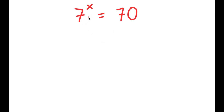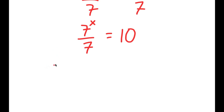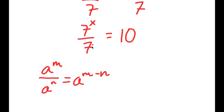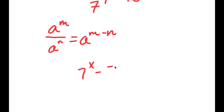So on this problem, I have 7 to the power of x is equal to 70. To solve this, I'm going to first start by dividing both sides by 7. So 70 divided by 7 is 10, so I have 7 to the power of x over 7 is equal to 10. Now if I have something in the form a to the power of m over a to the power of n, this is equal to a to the power of m minus n. So 7 to the power of x over 7 — 7 is the same thing as 7 to the power of 1, so I have 7 to the power of x over 7 to the power of 1.